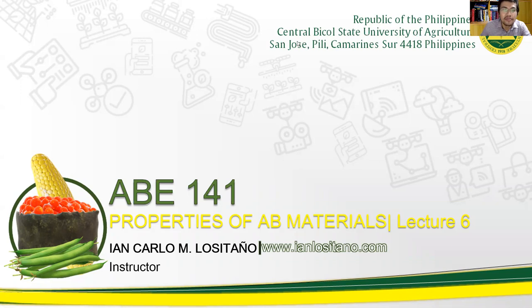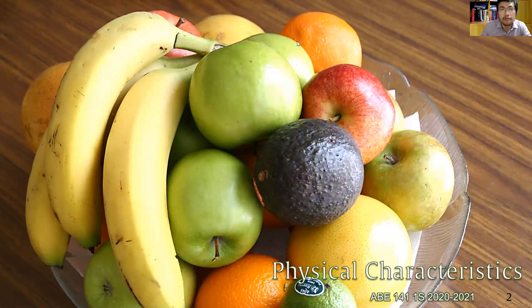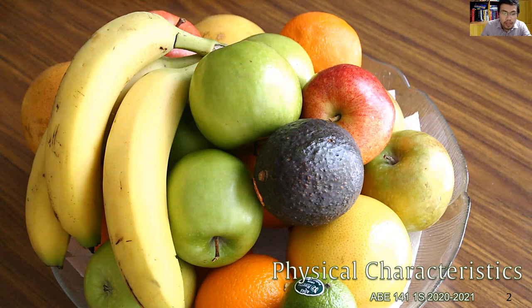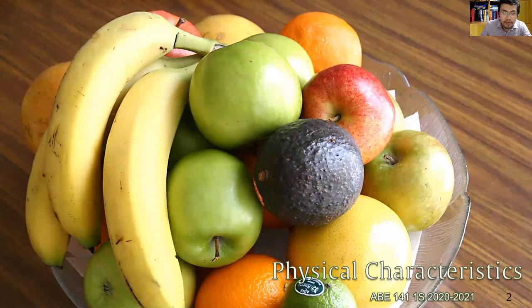Welcome back to lecture number six of the course properties of AB materials. We will be now discussing the common or standard shape descriptions of AB materials and also the packing coefficient. Last time we talked about the roundness and sphericity. We still need the topic of shapes.